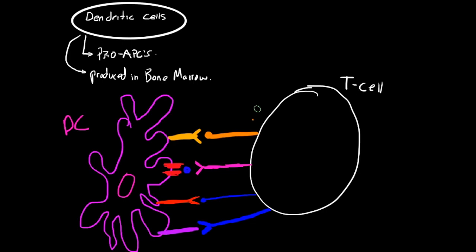Next on our list of cells to talk about in the immune system are dendritic cells. Dendritic cells are what we call professional antigen presenting cells. They're really good at presenting antigen to T cells and B cells.